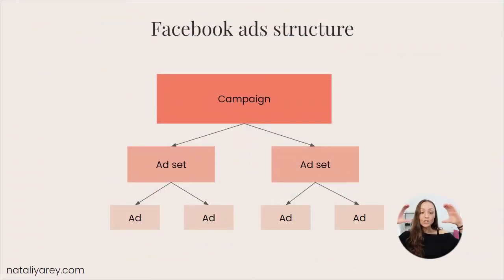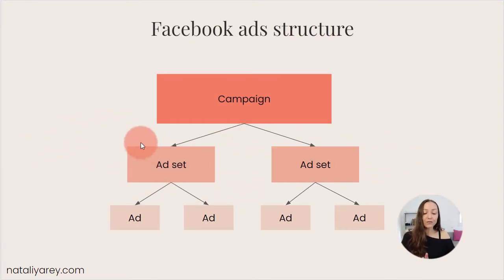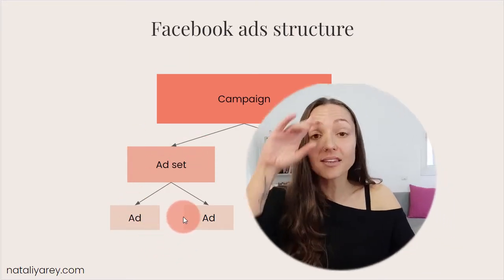Under each campaign you have different ad sets, and under different ad sets you have different ads. So you have tier one — your campaign; tier two — your ad set; and tier three — the actual ads. What I'm going to do now is explain each and every one of those elements as it relates to actually building a real-life campaign. Let's say you have some kind of an expert business and you sell a product, and the way you want to sell that product is using a webinar campaign.